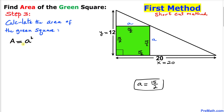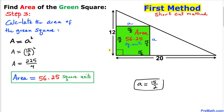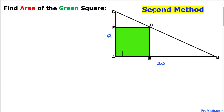The area formula is area equals a squared, where a equals 15 divided by 2. So area equals (15/2) squared, which gives us 225 divided by 4. Thus the area of this green square turns out to be 56.25 square units.